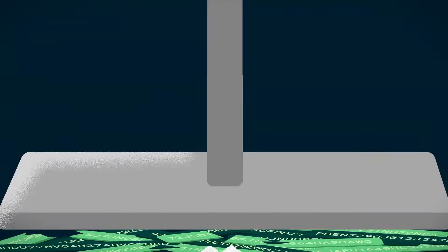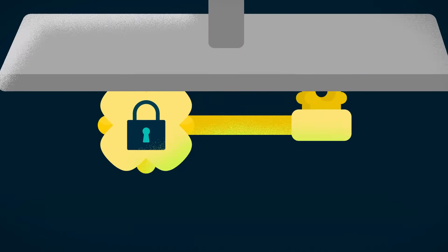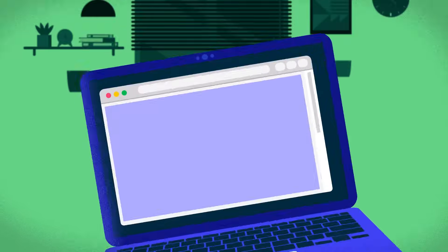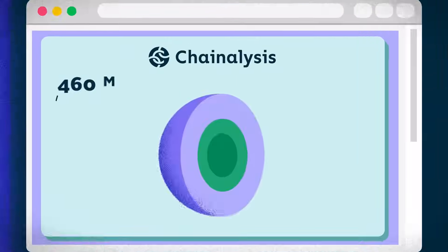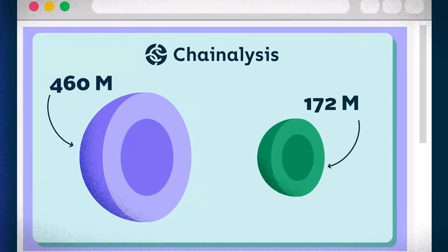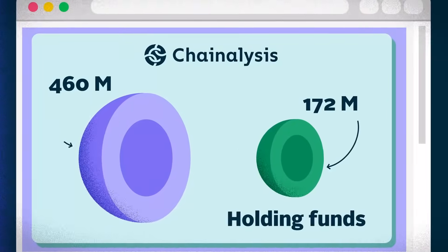But what if we simply generate a private key that controls any address with funds in it? Well, according to a blog post by Chainalysis in 2018, there are only 172 million addresses with the potential of holding funds.